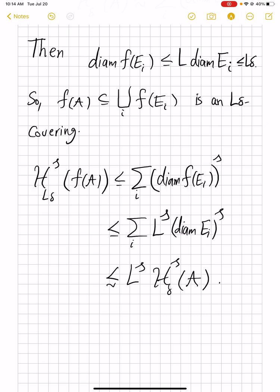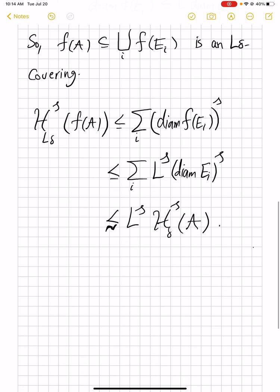And then the summation is pretty much equal to H^S_delta(A) by the choice of E_i's. And because we can make this estimate arbitrarily close, we have what we wanted. And the second claim is just letting delta go to zero. That ends the estimate.